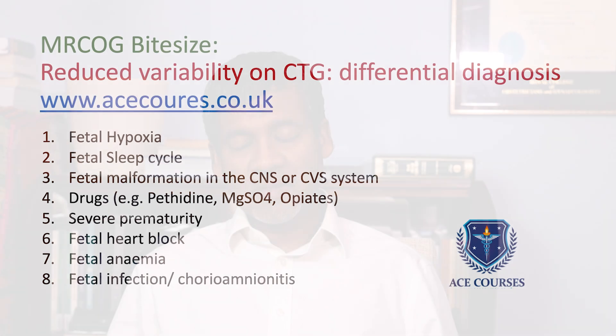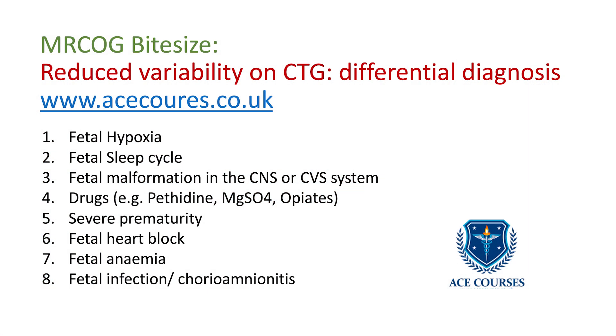So if you have diminished baseline variability — variability less than 5 beats per minute — what should you be concerned about? The first is fetal hypoxia, which is what we normally worry about when we see diminished variability. The second is that it could be a fetal sleep cycle, but that shouldn't really go on for more than 50 minutes.